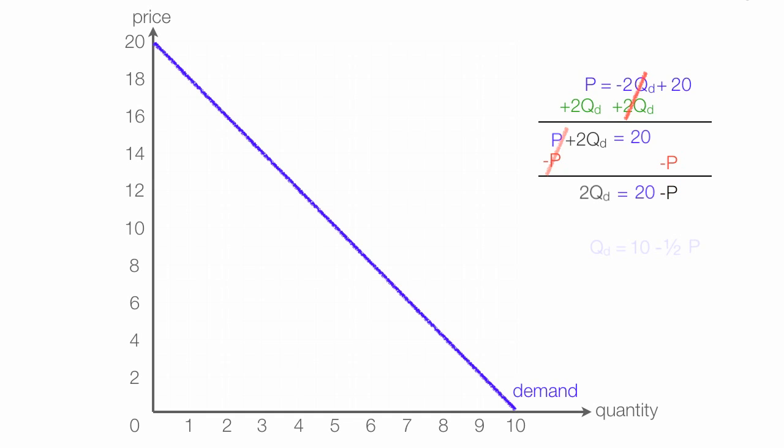I'm going to multiply both sides of the equation times 1 half to get rid of that 2 in front of that Q. So I have Qd is equal to, now I take 1 half times 20, which is 10, and now I take 1 half times negative P, which is negative 1 half P. Voila, there I have it.